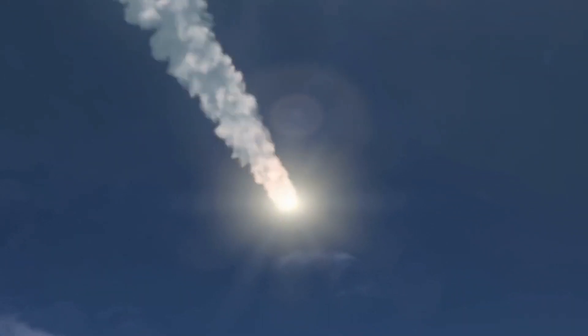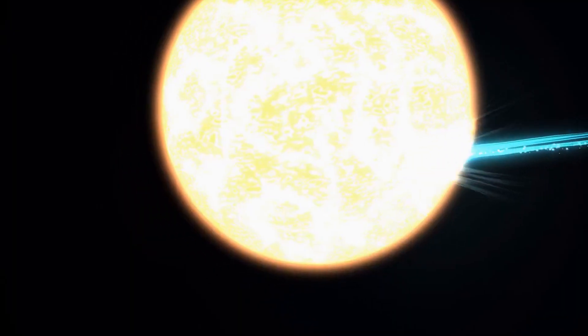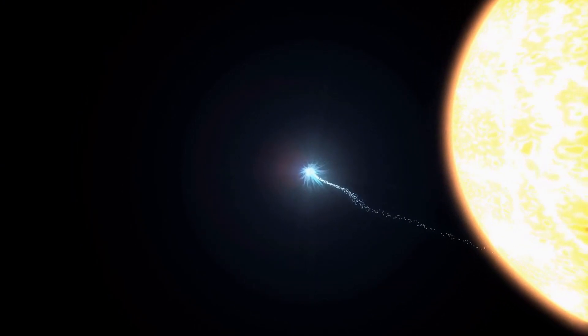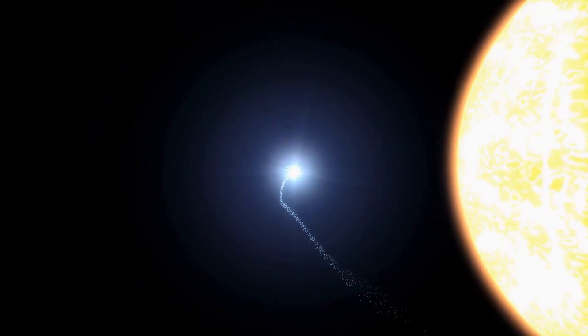Comets are fascinating celestial objects made up of ice, dust, and rocks. As they approach the sun, the heat causes the ice to vaporize and form a bright tail that can be seen from Earth.